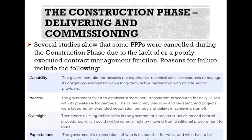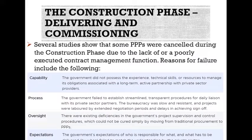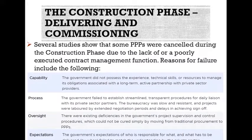Reasons for failure include the following. Capability: the government did not possess the experience, technical skills, or resources to manage its obligations associated with a long-term, active partnership with private sector providers. Process: the government failed to establish streamlined, transparent procedures for daily liaising with its private sector partners; the bureaucracy was slow and resistant, and projects were labored by extended negotiation periods and delays in achieving sign-off. Oversight: there were existing deficiencies in the government's project provision and control procedures, which could not be cured simply by moving from traditional procurement to PPPs. Expectations: the government's expectation of who is responsible for what, and what has to be delivered by when, failed to match the understanding by the private sector.